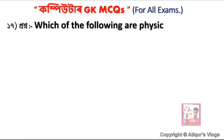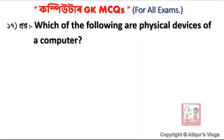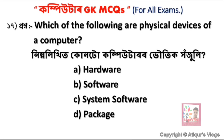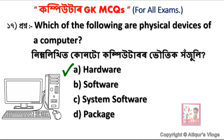Which of the following are physical devices of a computer? Option A is Hardware, option B is Software, option C is System Software, and option D is Package. The correct answer is option A — Hardware. Hardware refers to the physical devices of a computer.